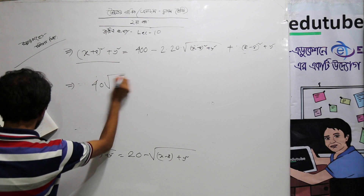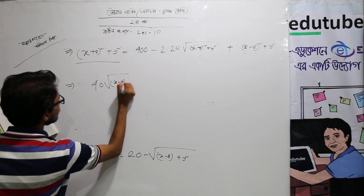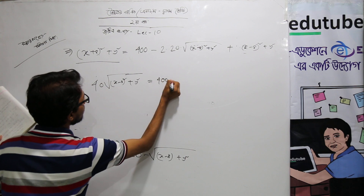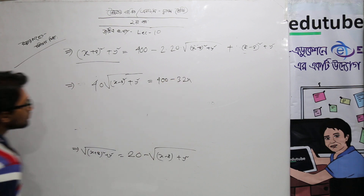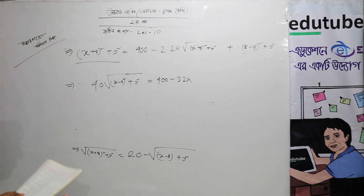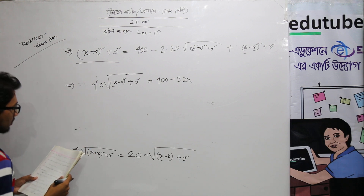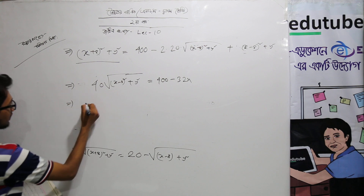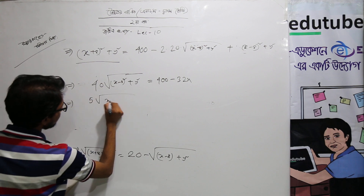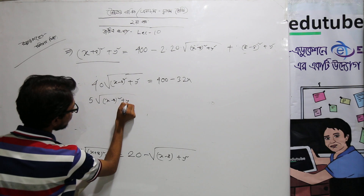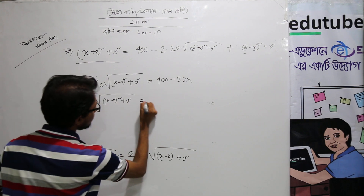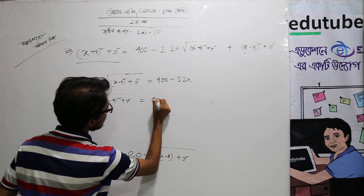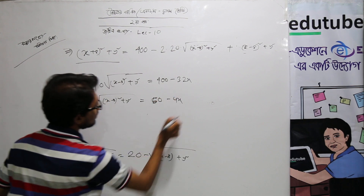Root over (x - 8) whole square plus y square equals 400 minus 32x. Simplifying: 5 times (x - 8) whole square plus y square equals 50 minus 4x.